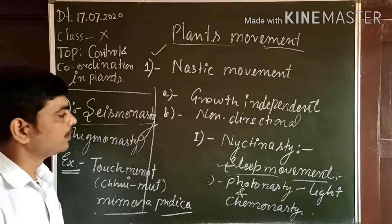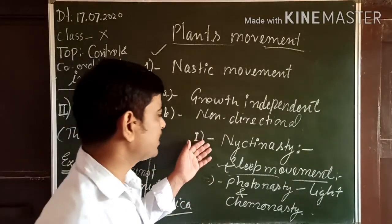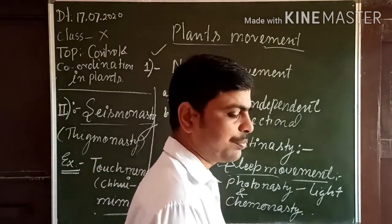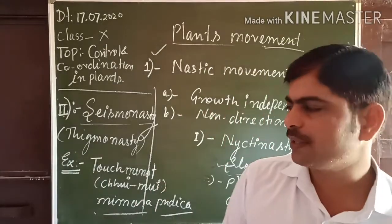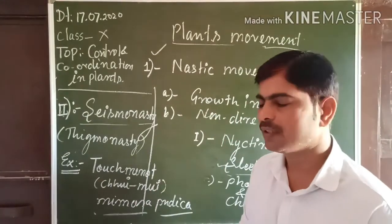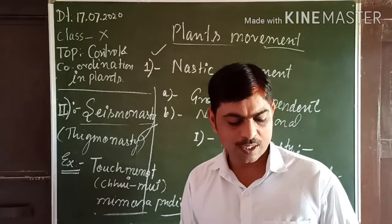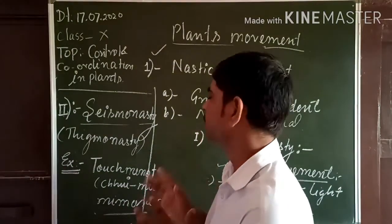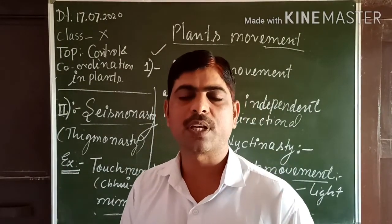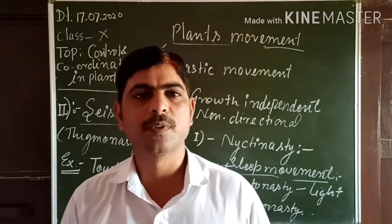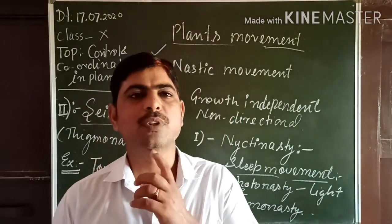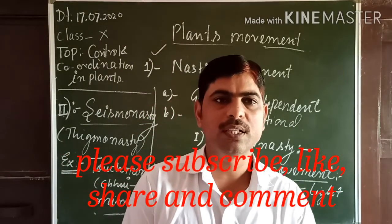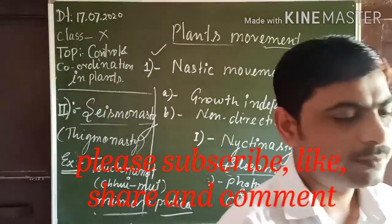So this is all about Nastic movement for your class. To summarize: plants show two types of movement — Nastic and Tropic. Nastic movement has two types: Nyctinasty and Sismonasty. Nyctinasty includes sleep movements and can be Photo-nasty or Chemo-nasty. We will meet soon after the exam. Watch the video again and again. Thank you very much.